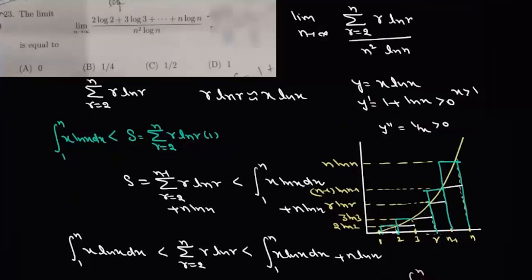We need to solve this limit: limit n tends to infinity of (2·log2 + 3·log3 + ... + n·logn) divided by (n²·logn), which we can write as limit n tends to infinity of summation r varies from 2 to n of (r·logr) divided by (n²·logn).